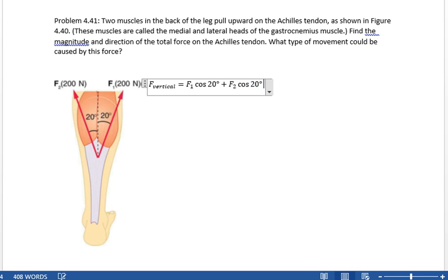And since F1 and F2 are both 200, this is simply 2 times 200 newtons times cosine of 20 degrees, which equals 400 newtons times the cosine of 20 degrees.